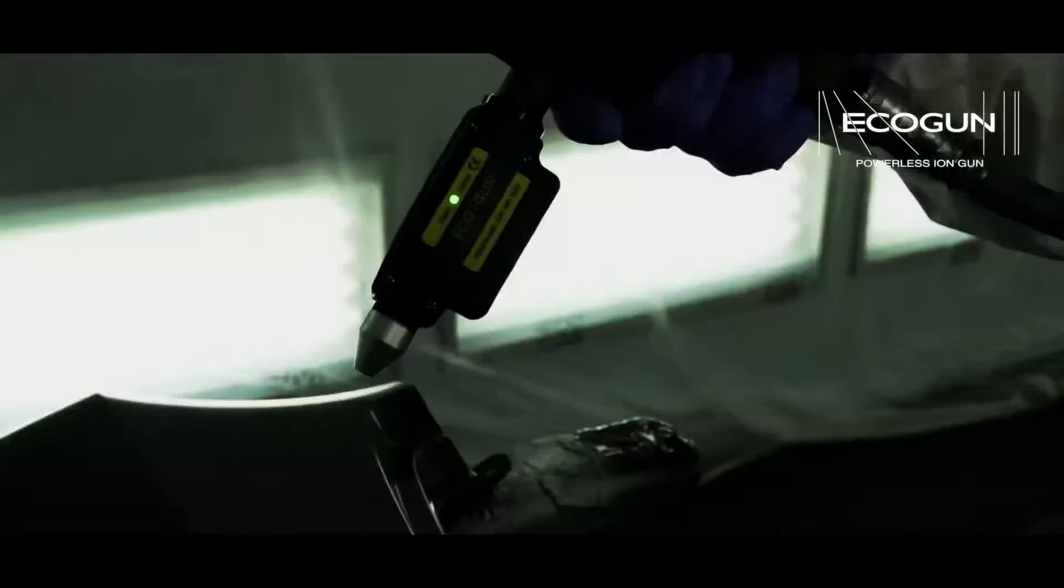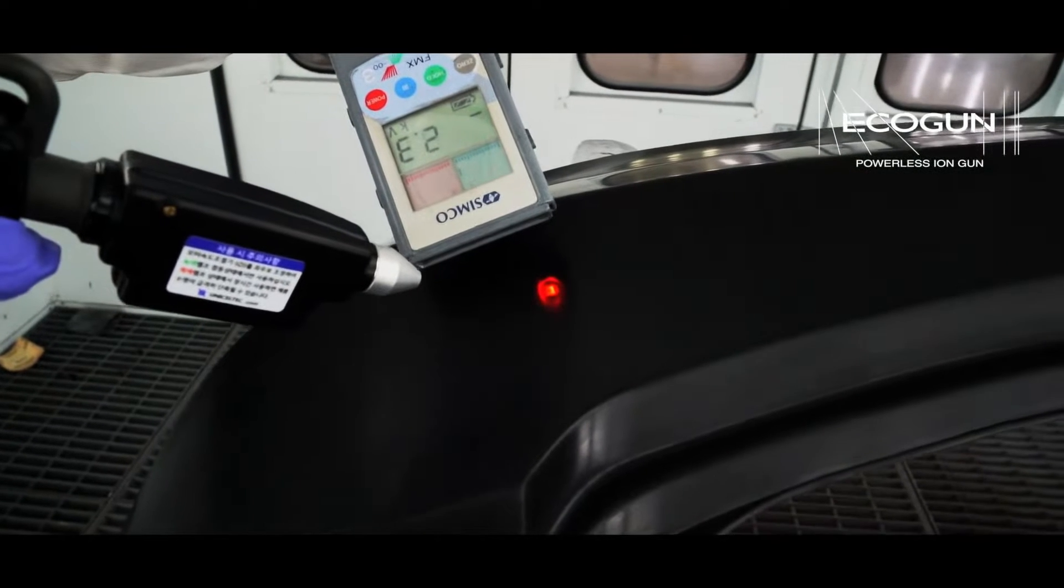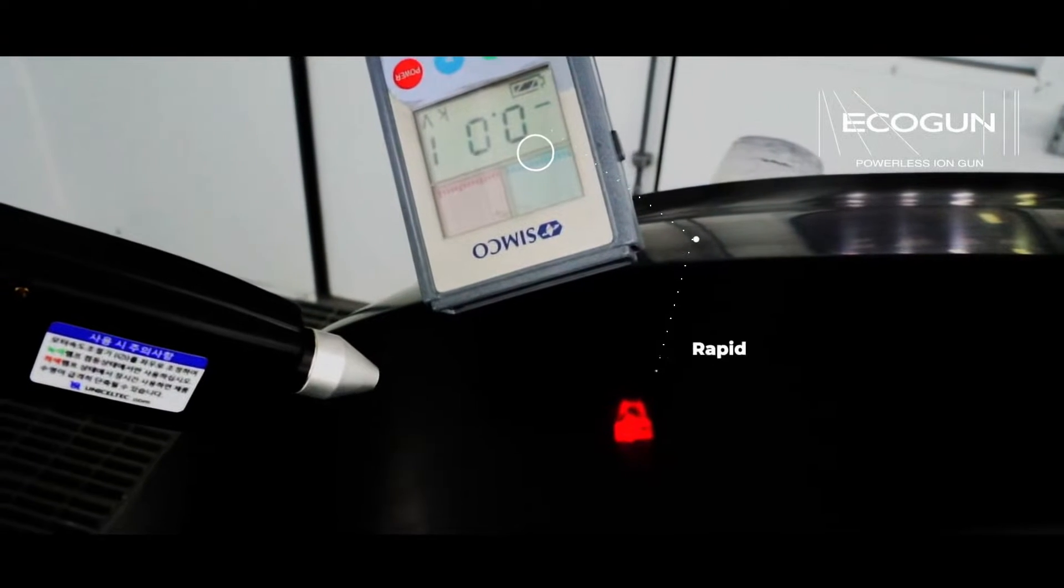Ecogun helps prevent dust, lint, and other impurities from sticking to the surface by static electricity and provides a faster, clean, and complete painting result.